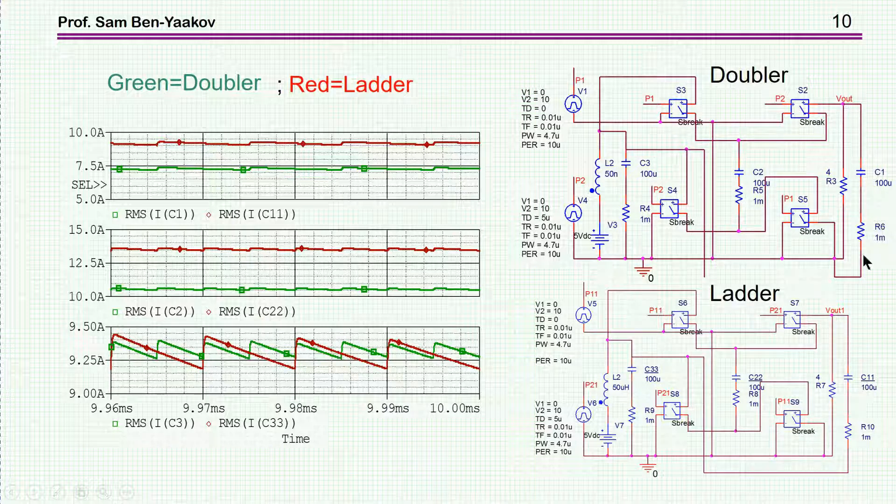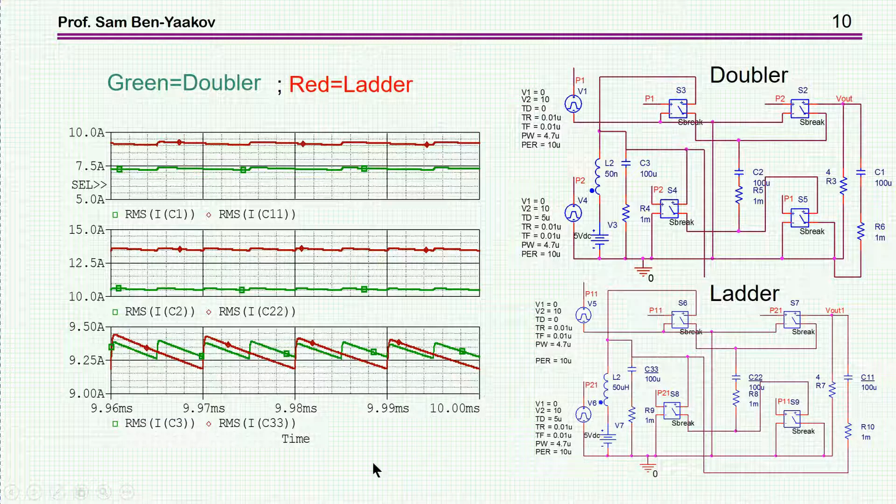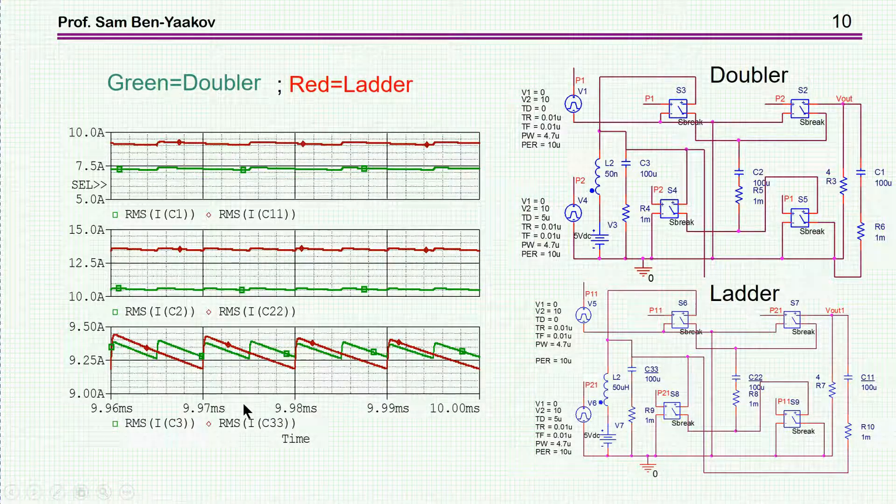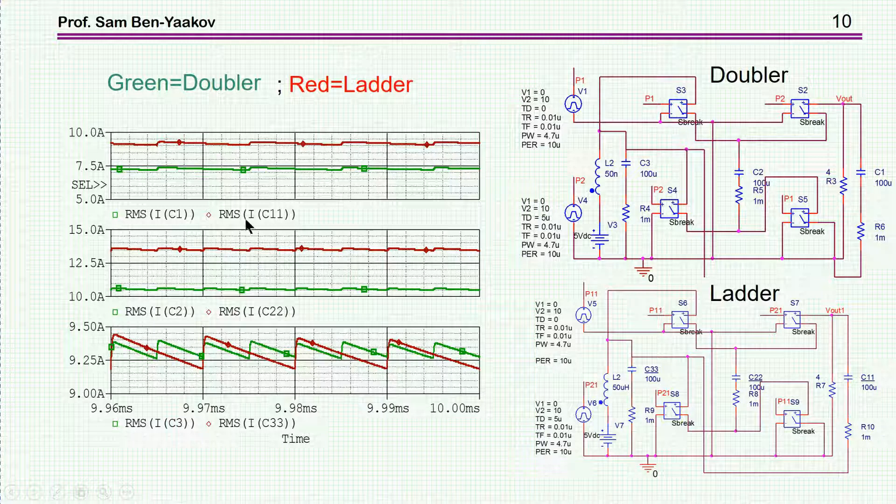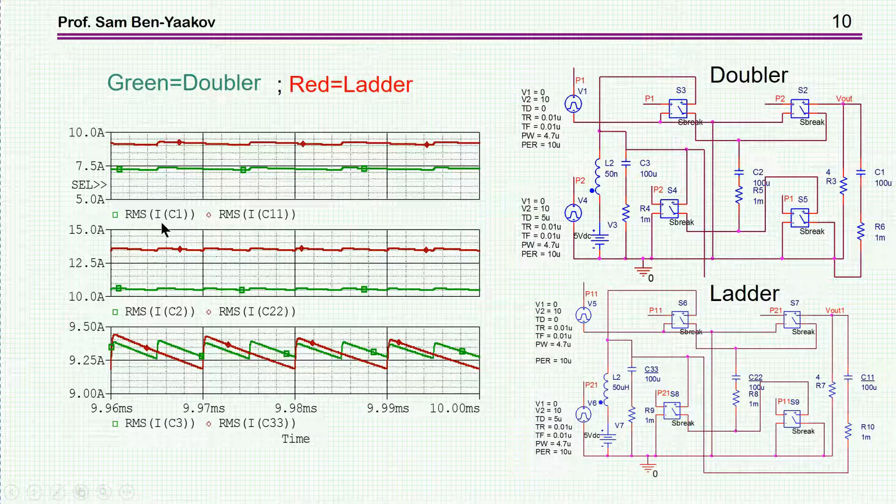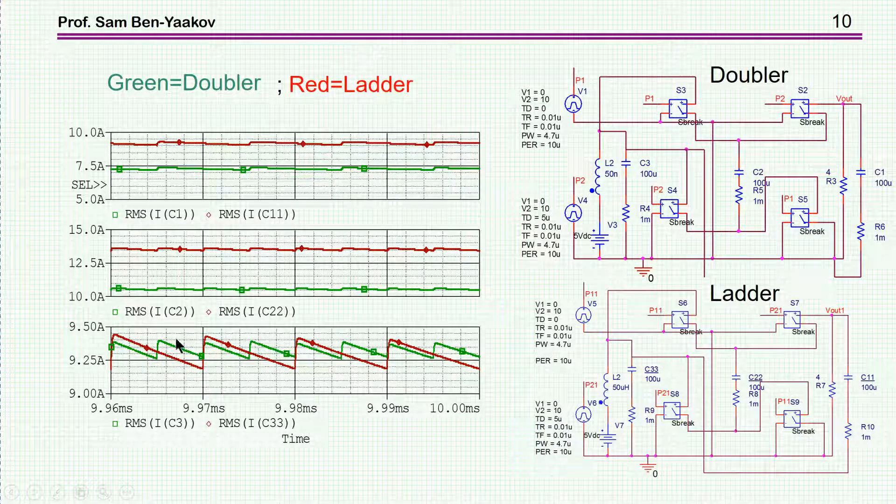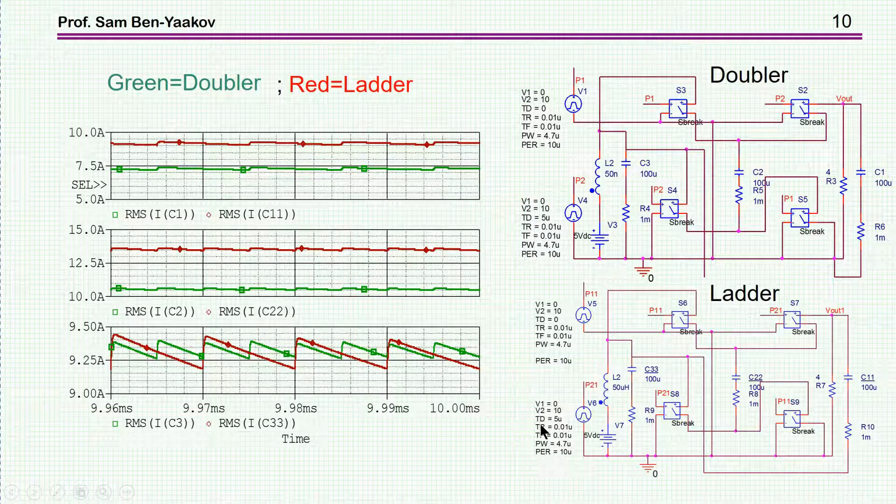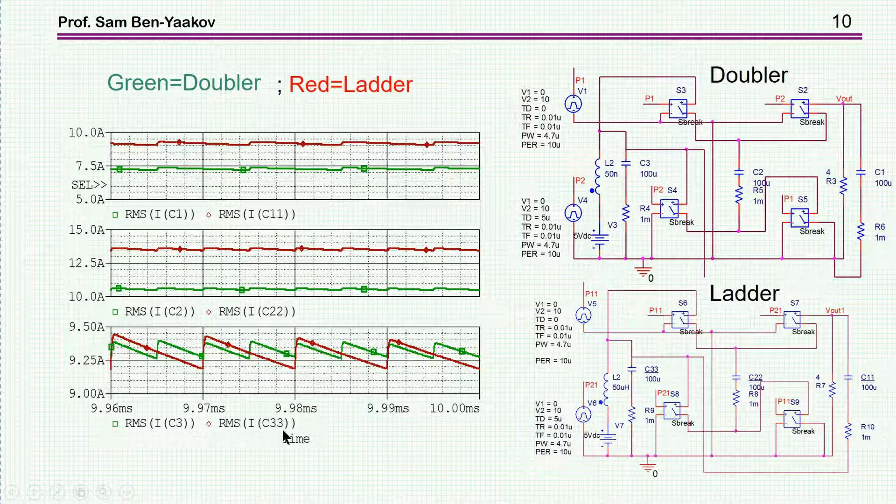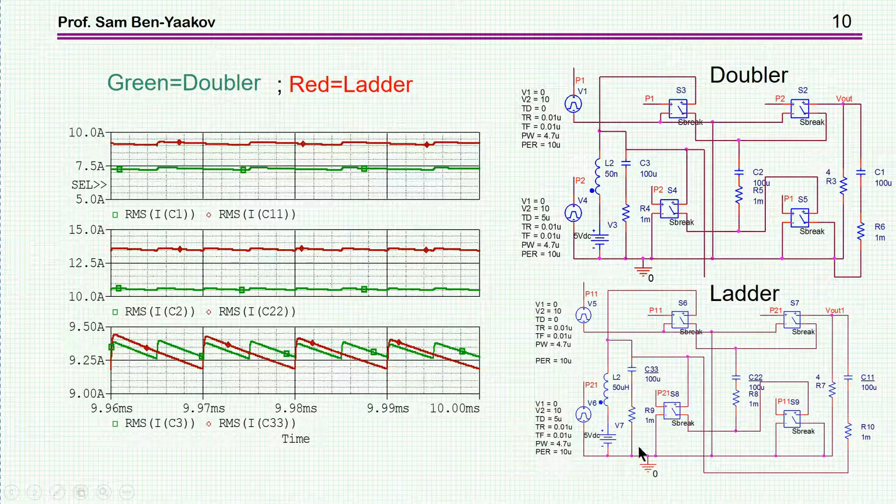Ideally, I should get, of course, 10 volts no load, and this time, I'm looking at the RMS values of the capacitors. Now, the RMS values are really responsible for the losses in the circuit, so looking at the RMS values really tells you about the losses in the circuit. So, these are three capacitors. C1 is the output capacitor in the case of the doubler, and C11 is the output capacitor in the case of the ladder. C2 is the flying capacitor, here it is for the doubler, and C22 for the ladder, and similarly, C3 and C33 correspond to the capacitor at the input.